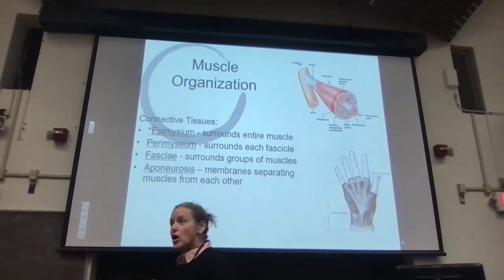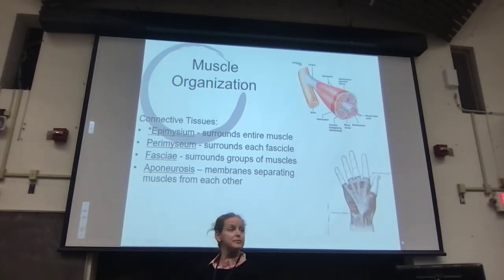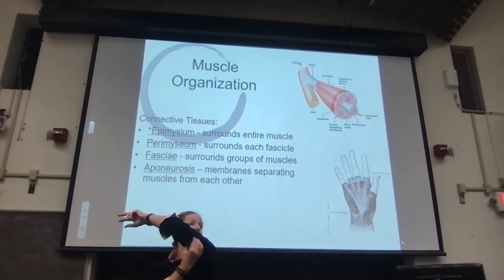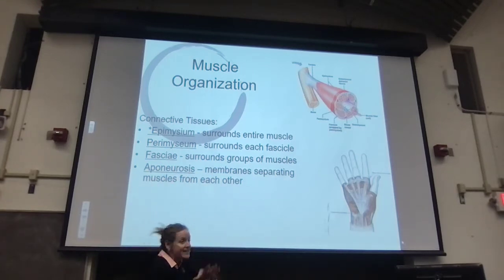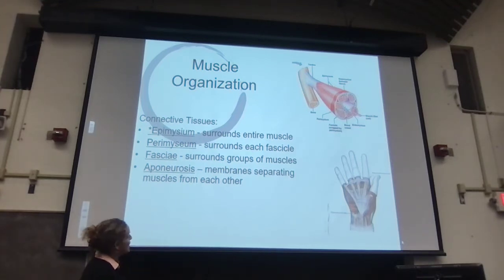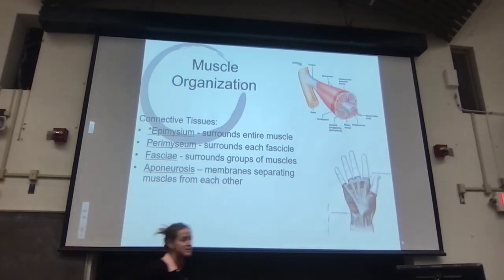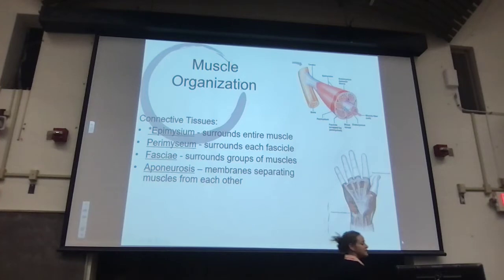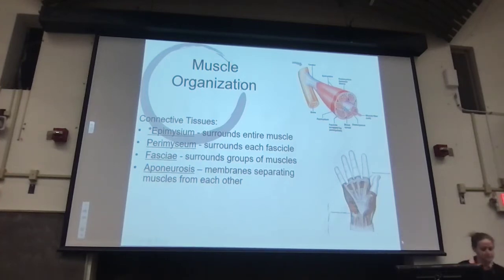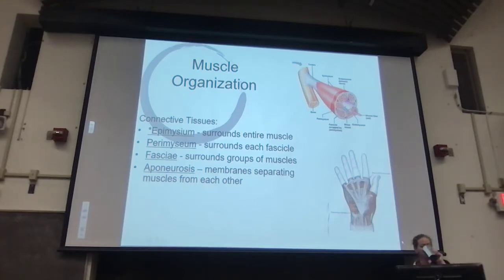As we've already seen in lab, muscles exist together a lot of times. Think of the quadriceps or the triceps brachii — these muscles exist together in sheets. The only covering I'm going to ask you to know is the epimysium, which covers the whole muscle — the same thing we talked about last week.